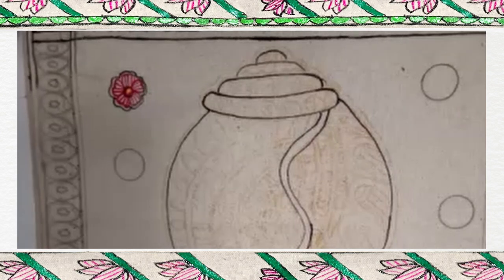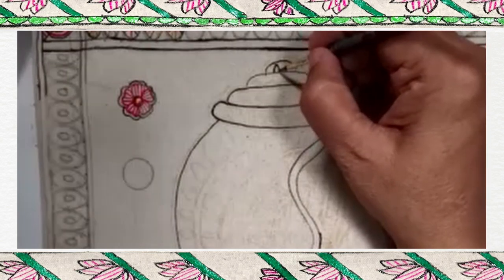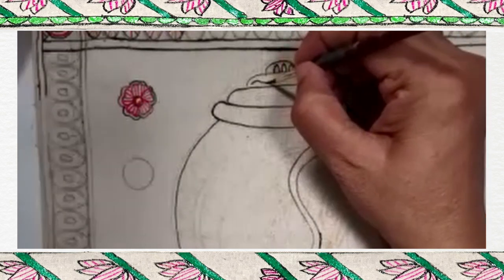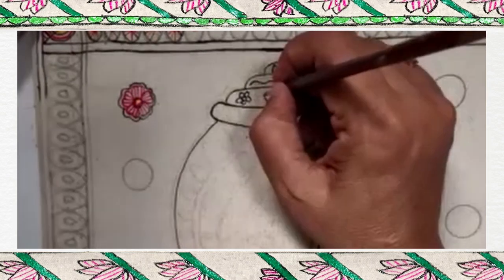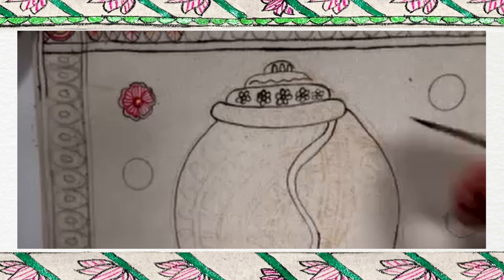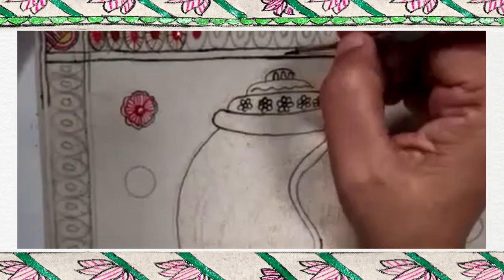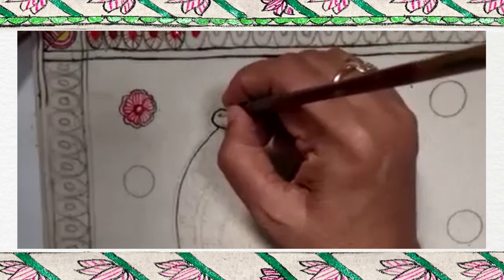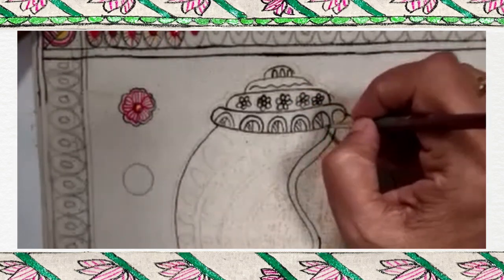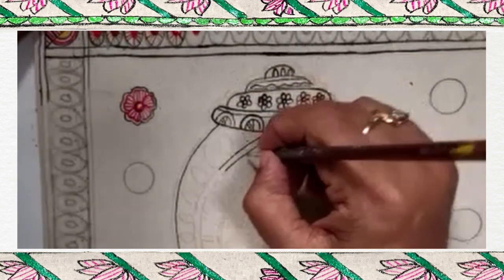This is the basic outline of the conch. Now, Alankaran. So, Alankaran I will start from the top. As you all know, Alankaran means decoration. So, Alankaran space was left so I have given 5 petals. Rest is 6.